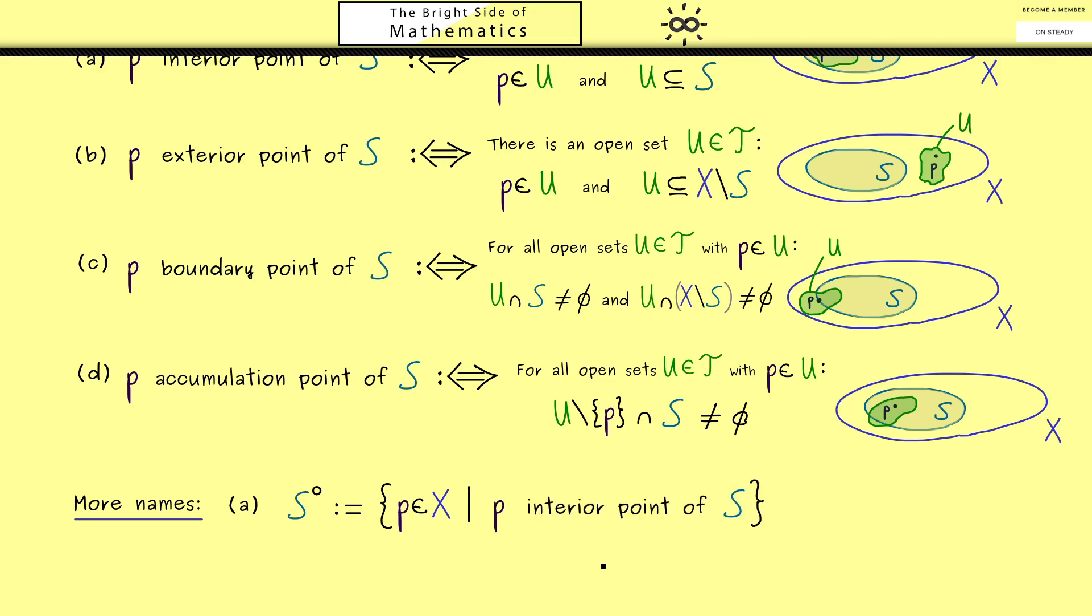Therefore, S° is called the interior of S. So the interior is defined for a subset and it gives us a new subset. And now it might not surprise you that we can do a similar thing for all the other points here.